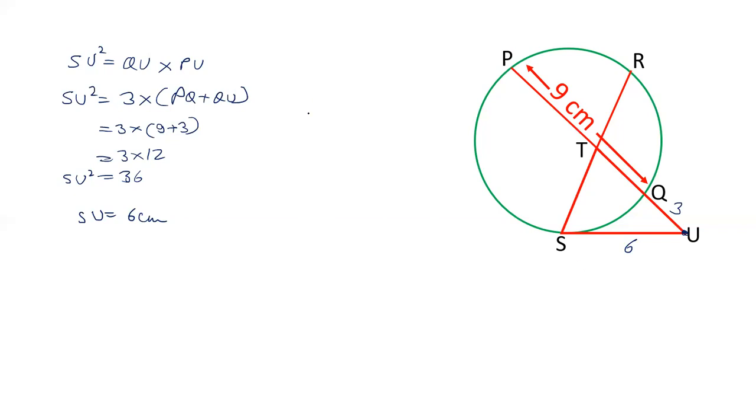Now this tangent SU equals TU. It is given in the question, and that equals TR. So TR will also be 6 centimeters, and TU is also 6 centimeters. TU is TQ plus QU, that is 6. QU is 3, so TQ is 6 minus 3, that is 3 centimeters.